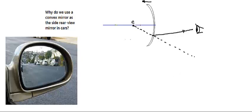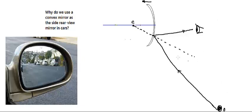This is the normal, so this will be the angle of reflection. Taking an equal angle on this side gives the angle of incidence, and this becomes the incident ray. The object is somewhere over here — light from the object falls onto the convex mirror, gets reflected, and reaches the observer, allowing the driver to see an object which is behind.